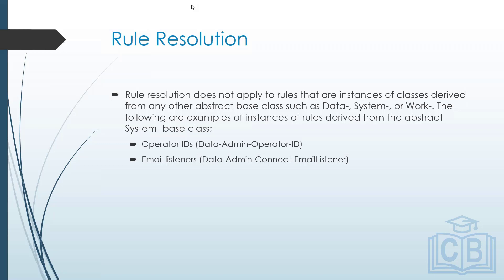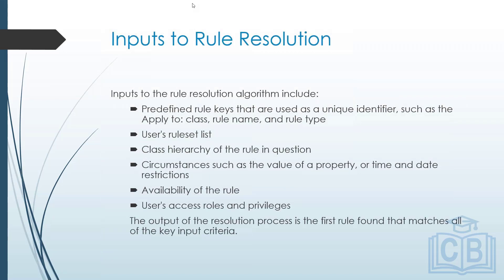We understand the outcome — giving the correct rule for the given context — but since it is a search algorithm, what are the inputs? Just like finding a missing person requires a photograph and physical details, the RR also needs certain inputs. You provide the inputs, RR finds the rule, and gives it back to you.